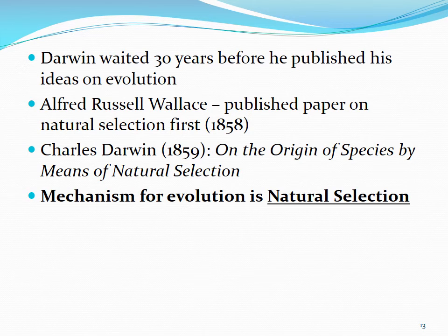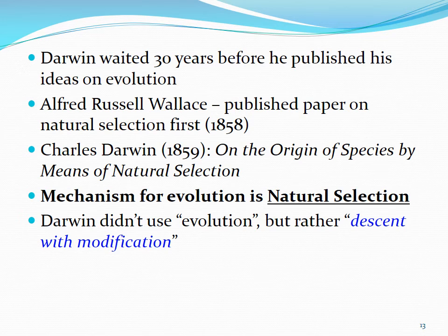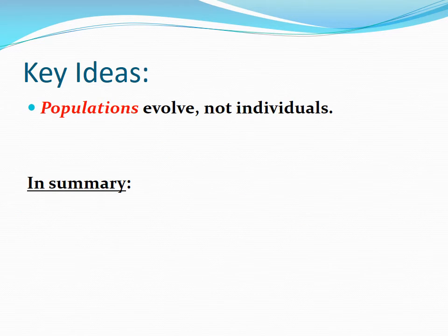Darwin's idea was that the mechanism for evolution is natural selection — evolution is change in genes over time in a population, and it occurs by natural selection. Darwin never actually used the term 'evolution'; he always called it descent with modification. Importantly, populations evolve, not individuals. You either live and have babies or you die and don't — the human species as a whole is what evolves.